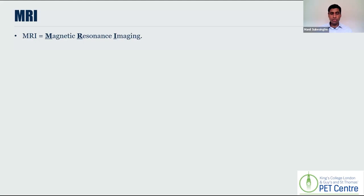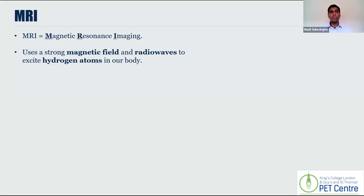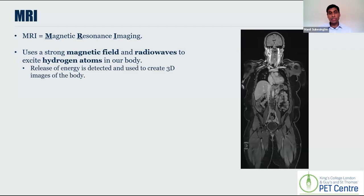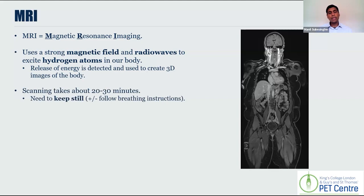Moving on to another cross-sectional imaging modality — MRI, which stands for magnetic resonance imaging. Here we don't use electromagnetic radiation. Instead, we use a magnetic field and radio waves to excite hydrogen atoms in our body. Hydrogen is linked to oxygen to make water, and our body is predominantly water, which is why magnetic fields work. We excite these hydrogen atoms, they release energy, and we can create very detailed 3D imaging of the human body, comparable with CT. MRI scanning takes longer than CT — on average 20 to 30 minutes, potentially longer depending on how much of the body you're imaging. Keeping as still as possible is really important, and you may also have to follow breathing instructions.